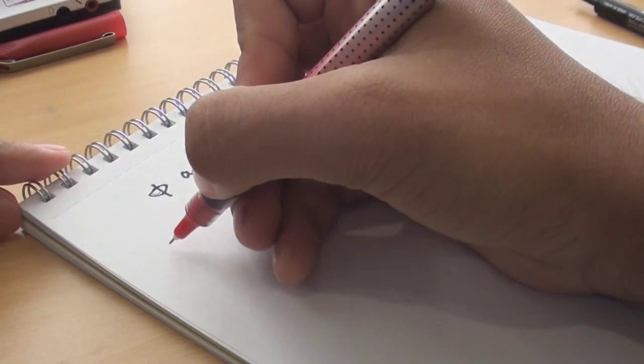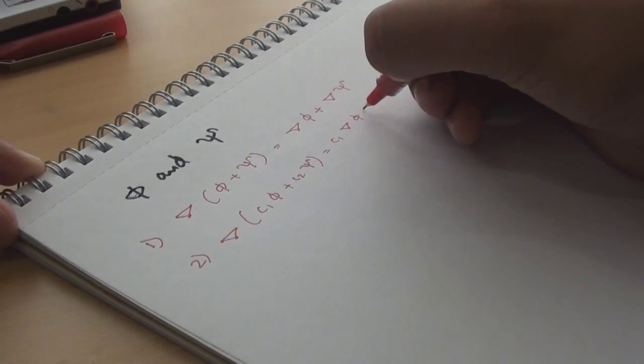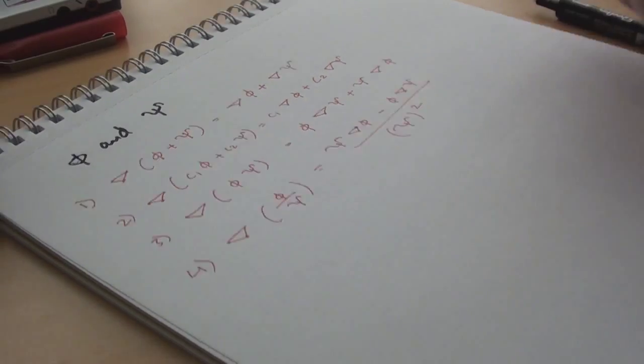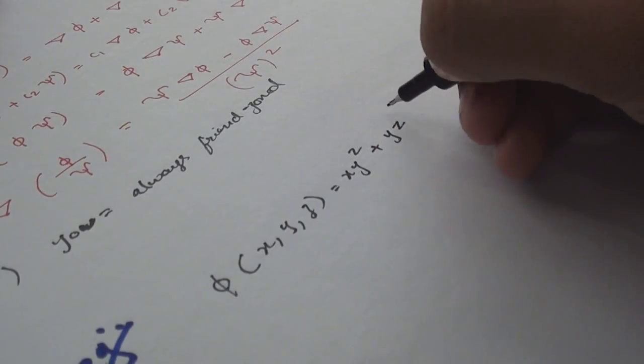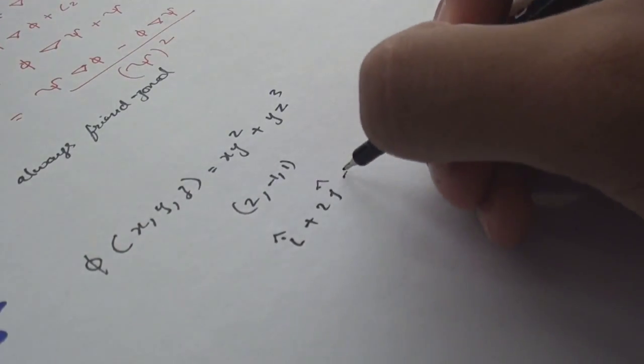And if we are dealing with two scalar point functions φ and ψ, then we have a few obvious gradient properties: commutative for constants c1 and c2, the product rule, and the division rule. For example, find a direction derivative of φ equals xy² plus yz³ at the point (2, -1, 1) in the direction of the vector i plus 2j plus 2k.